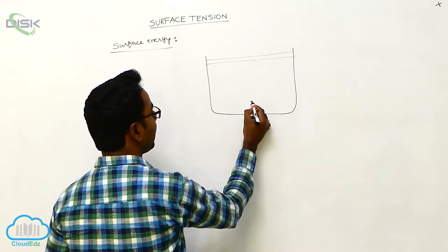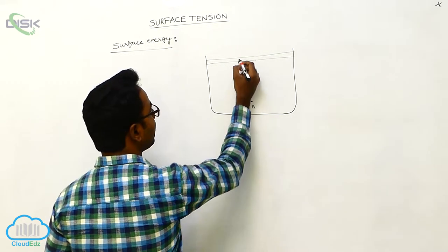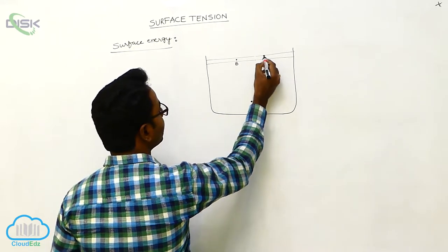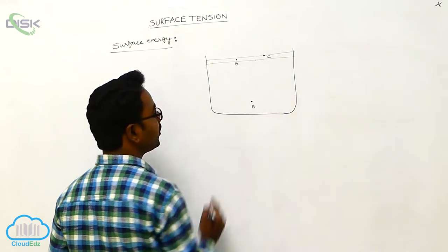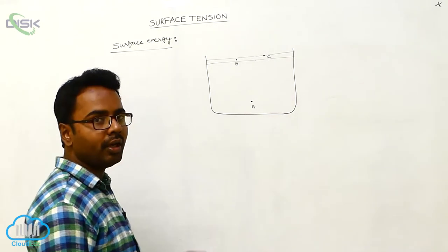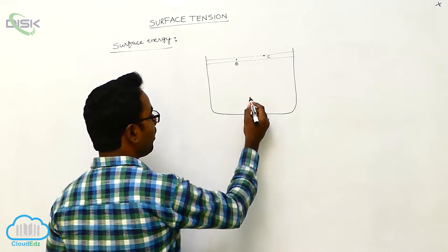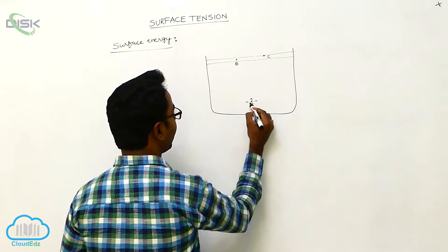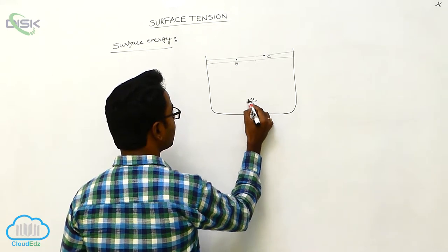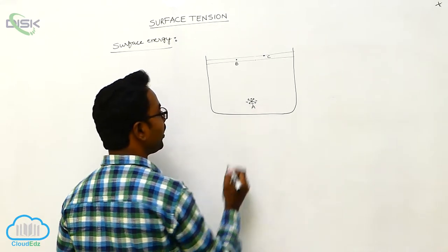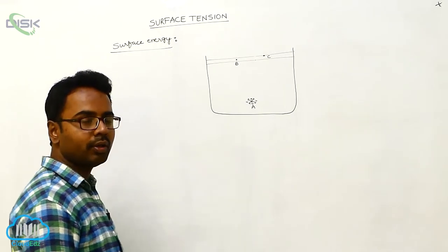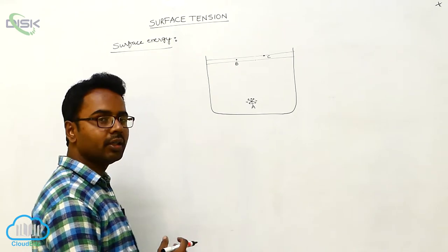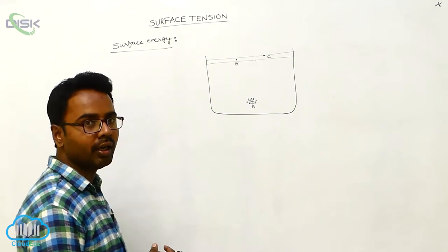Let us understand surface energy by considering three molecules: molecule A inside the liquid, molecule B inside the surface film, and molecule C on the surface of the surface film. Molecule A is surrounded by other molecules and experiences attractive forces in all directions, so the resultant force acting on molecule A is zero.